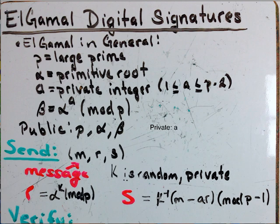Again, K is private, so you cannot formulate R or S without knowing K.